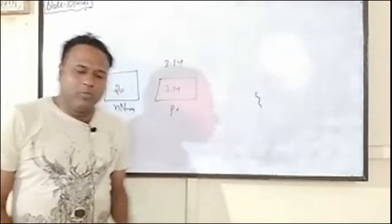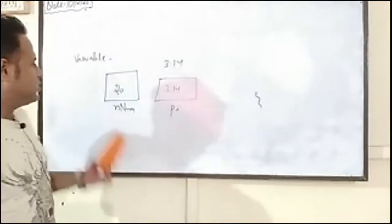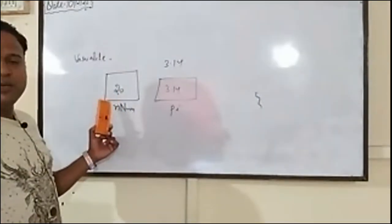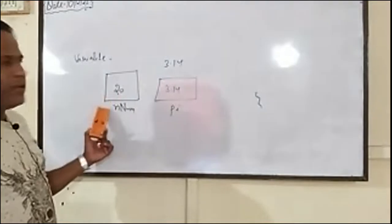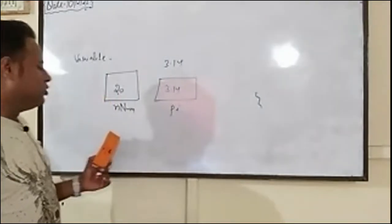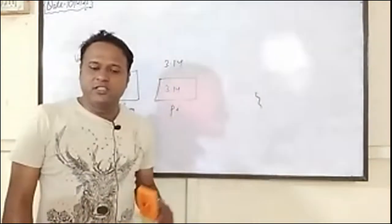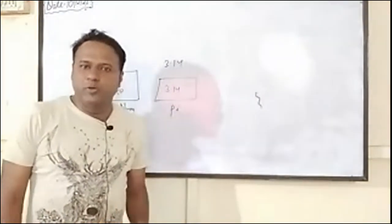A constant refers to the memory location whose value is fixed throughout the program execution. A variable is a memory location where you store a value, and that value changes throughout the program execution.